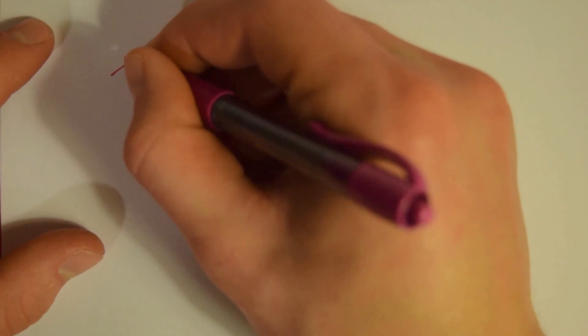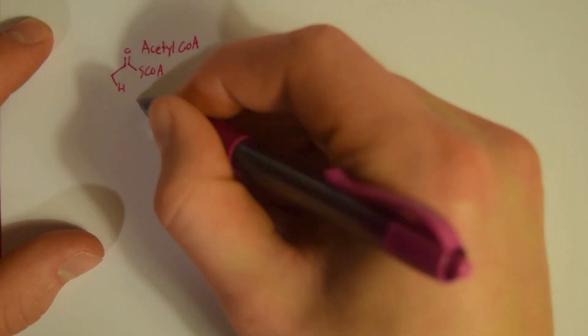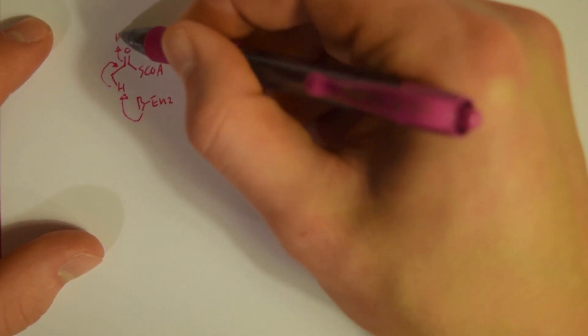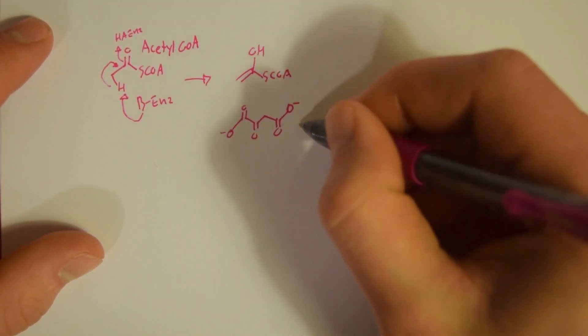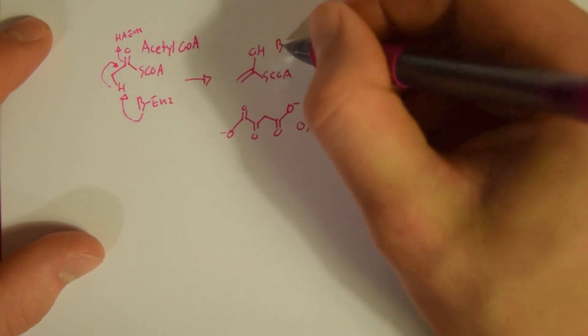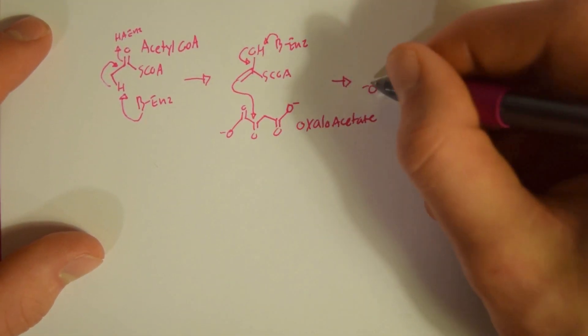So the first step of the citric acid cycle is when we take the acetyl CoA and we make an enol out of it. That enol then attacks oxaloacetate, and we're going to see oxaloacetate towards the end of the cycle again.